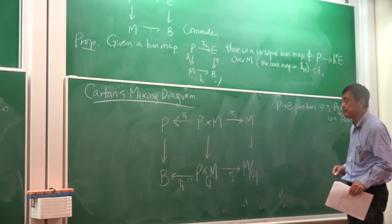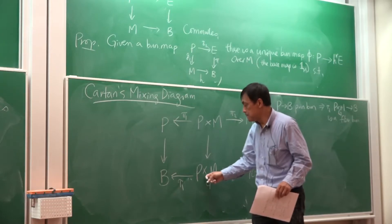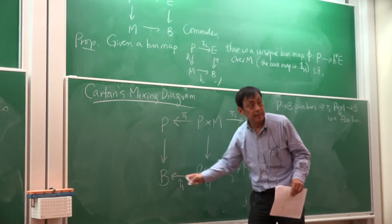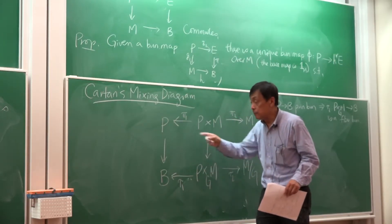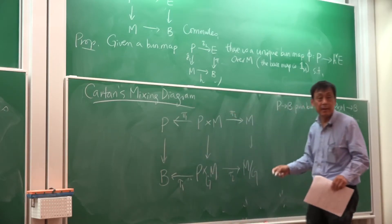And then the fact that the fiber is M, actually comes from the fact that G acts freely on P, okay?